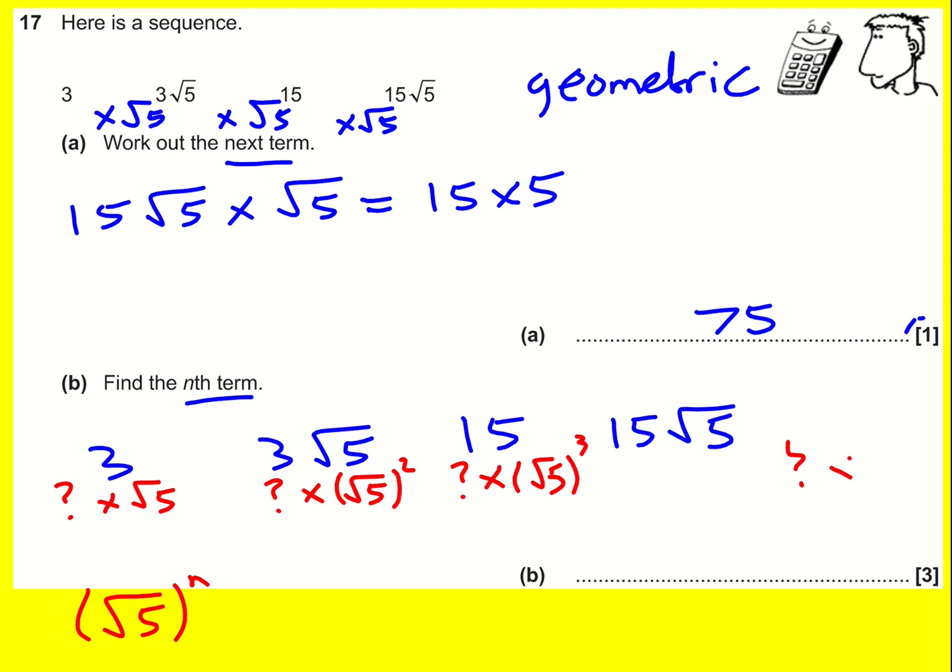So the nth term is going to be something times root 5 to the n. The question is, how do we find this something? Well, I can do similar to what we do with a linear sequence and I can find the zeroth term. I can go back the other way, so I can divide through by root 5 to find what the zeroth term would be because that will leave me with the question mark by itself.